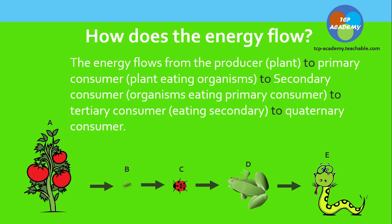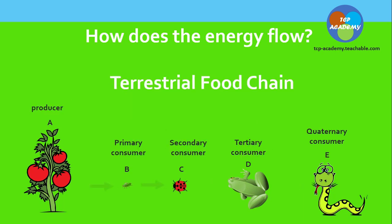The energy flows from the producer, which is the plant, to the primary consumer, which is the aphid at B, to the secondary consumer at C, and then to the tertiary consumer at D. For this food chain, we have a quaternary consumer, which is the snake at E. Your syllabus says you are supposed to construct a food chain with at least four levels. So if we go for the minimum, our food chain would have stopped earlier. We're going to discuss why that is.